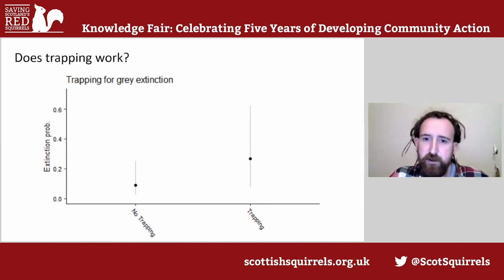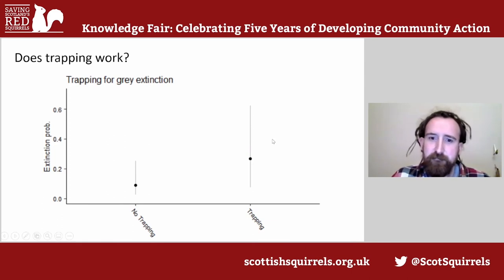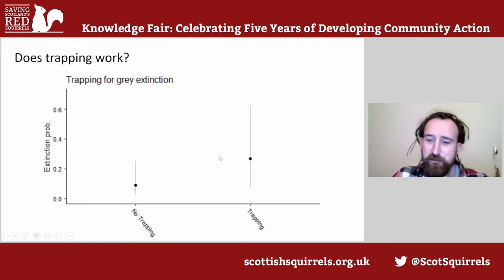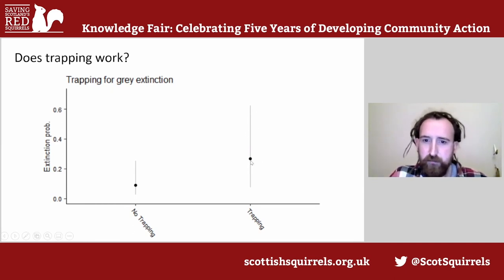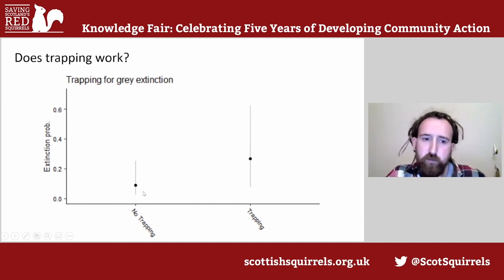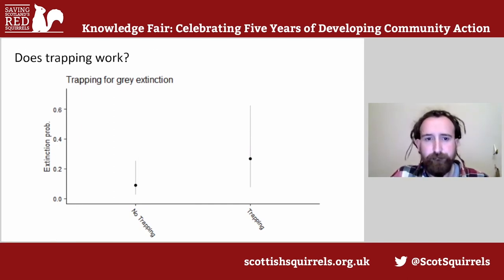Does trapping work? Does trapping greys increase extinction probability? Yes — I can say that fairly rigorously now. The extinction probability of grey squirrels is about 30 to 40 percent higher whenever trapping is being done in a tetrad compared to no trapping, where squirrels do still go extinct but not nearly to the same level.